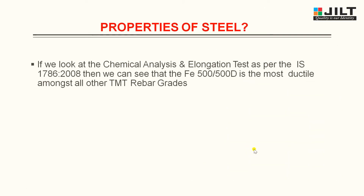Now let us see the properties of steel available. If we look at chemical analysis and elongation tests as per IS 1786-2008, we can see that FE500 and FE500D are the most ductile among all other TMT rebar grades. This is why we prefer FE500 and FE500D today — they have more ductility compared to all other TMT bars like FE415, FE550, FE600, etc.